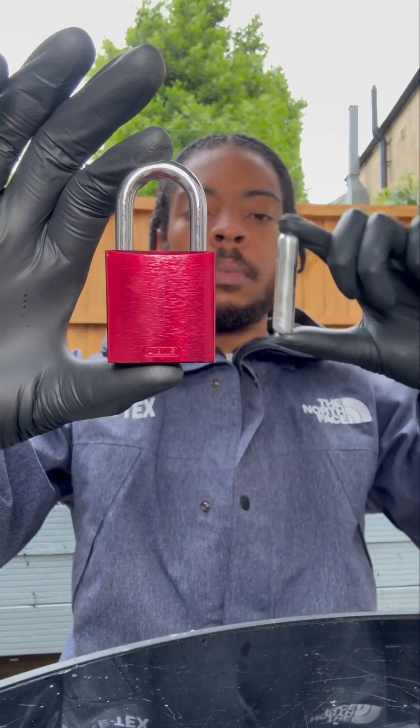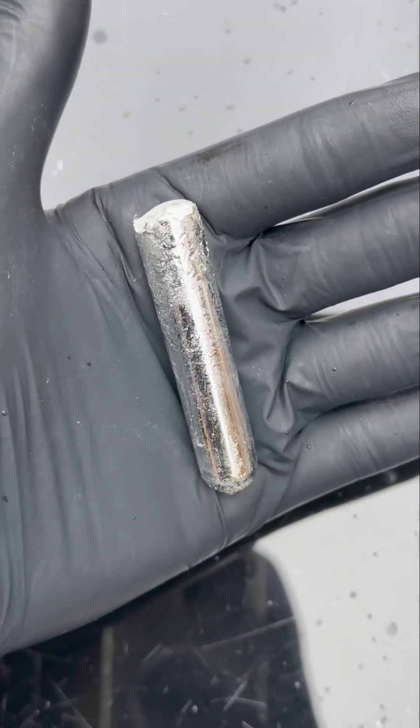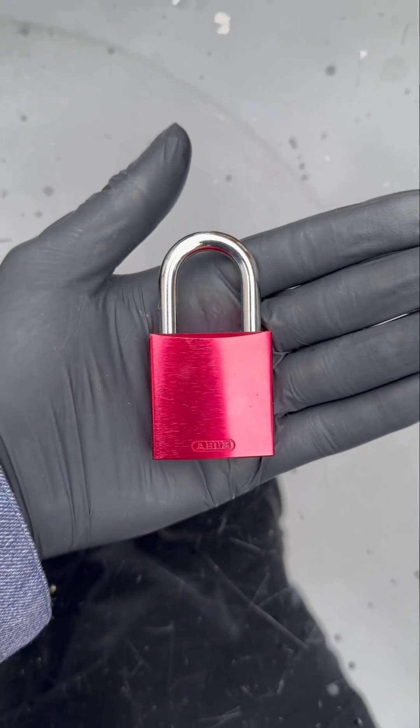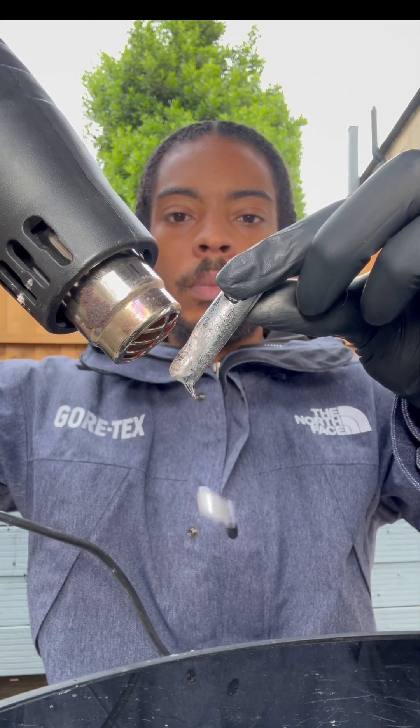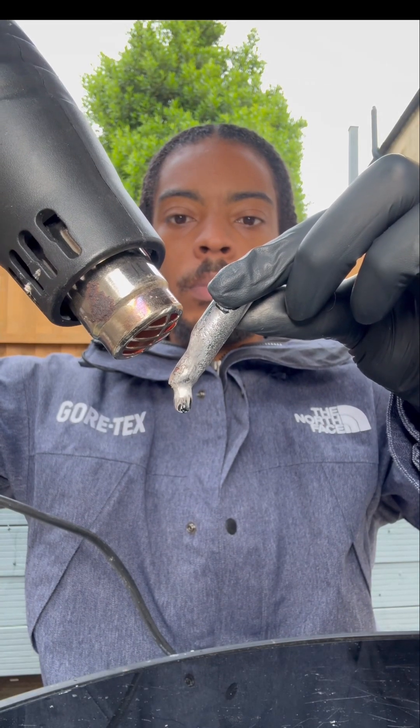Alright boom, we've got one aluminum padlock here and some gallium metal, and we're going to use the gallium to destroy the padlock. So first we've got to melt the gallium.